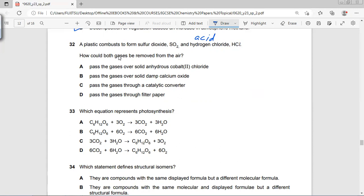A plastic combusts to form sulfur dioxide and hydrogen chloride. Both are acidic gases. You know that because both are non-metal gases. How could both gases be removed from air? You can combine them with a base.